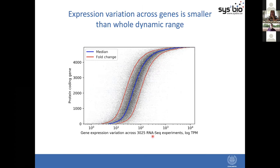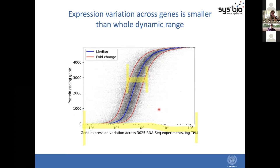We obtained a huge dataset of practically all available RNA sequencing experiments at that time, covering the majority of experimental conditions. On the x-axis we have transcripts per million, log TPM, and on the y-axis the protein coding genes sorted by median expression level. What we see is that the variation of gene expression per gene is actually much smaller than the whole dynamic range, showing expression levels are quite well conserved across conditions. Genes highly expressed in one condition will likely be highly expressed in others, suggesting these basal average expression levels are encoded in the DNA sequence itself.